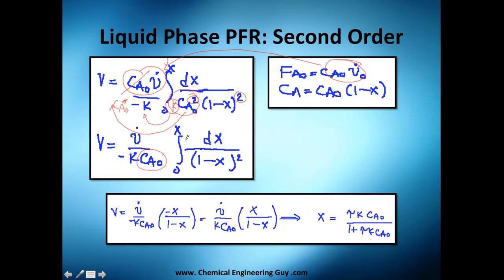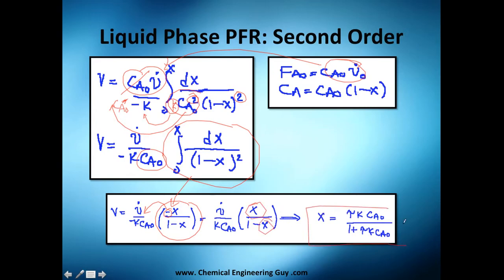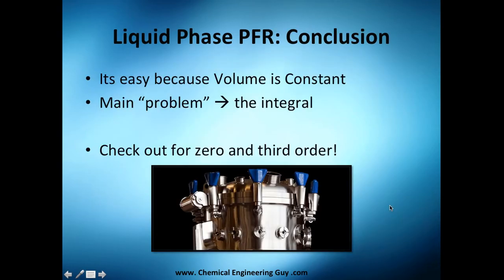Using a table of integrals to solve this gives the standard result for that integral. Taking out the negative sign and solving for X, the final equation shows that conversion depends on k·τ·C_A0. So the conclusion is that for second order liquid phase PFR, the result still involves the group k·τ but now multiplied by the initial concentration C_A0.